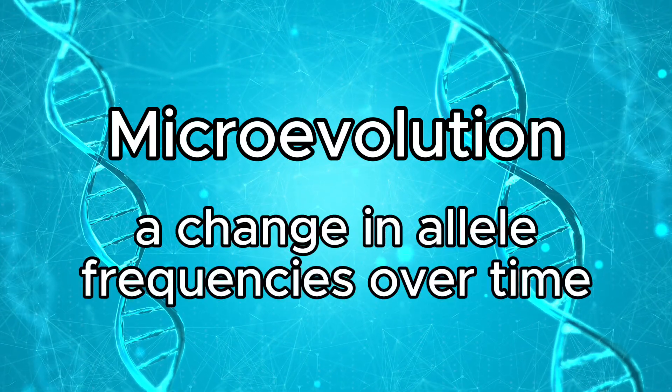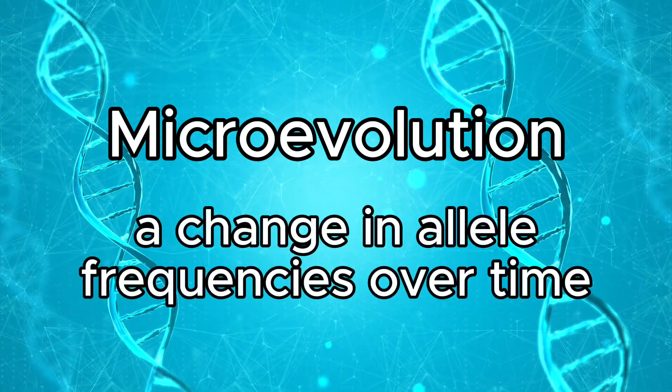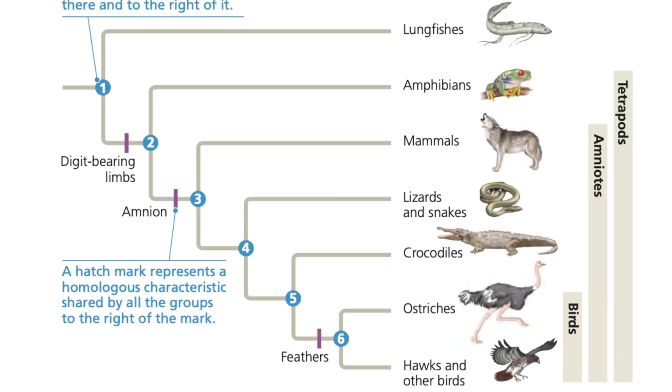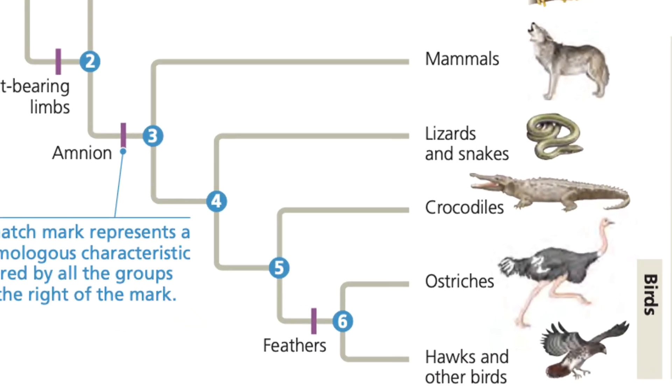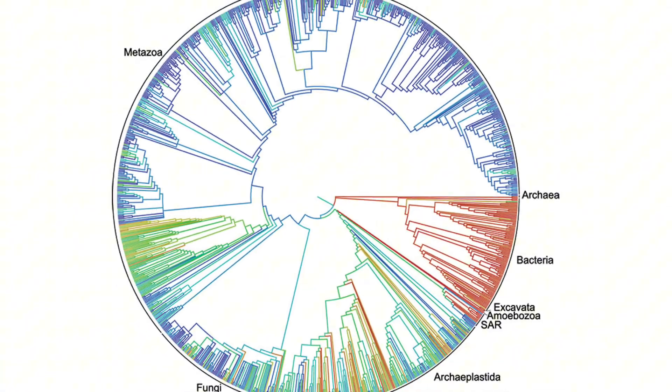In a previous video, we discussed microevolution as defined by a change in allele frequencies over time. Macroevolution, on the other hand, is the broader pattern of changes in species we observe across much larger expanses of time. But like an 8-bit painting or a mosaic which becomes increasingly hard to see as we zoom in, the same could be said about the linkage between microevolution and macroevolution. So today, we'll try to tackle that challenge and gain a better understanding of how microevolutionary processes can lead to speciation and thereby explain the patterns of macroevolution that we see.